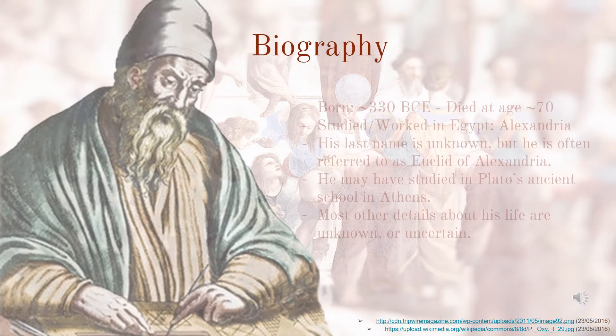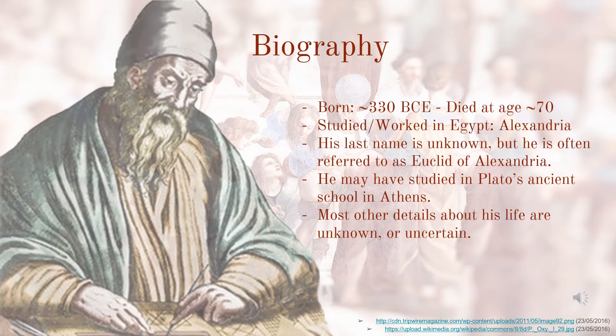Little is known about the life of Euclid of Alexandria. His birthplace is debated; however, it is known that he was born circa 330 BCE and died at age 70 in Alexandria, Egypt. It is said that Euclid studied in Plato's ancient school in Athens.